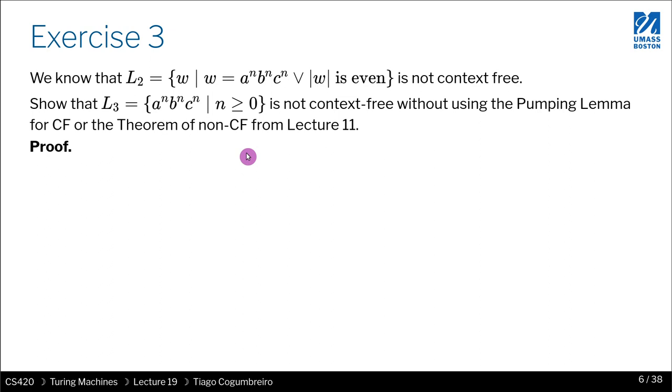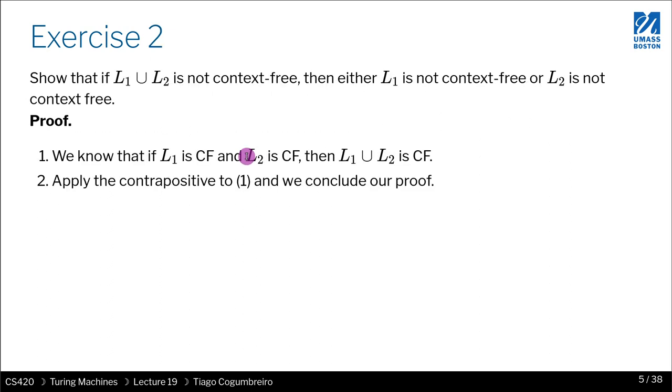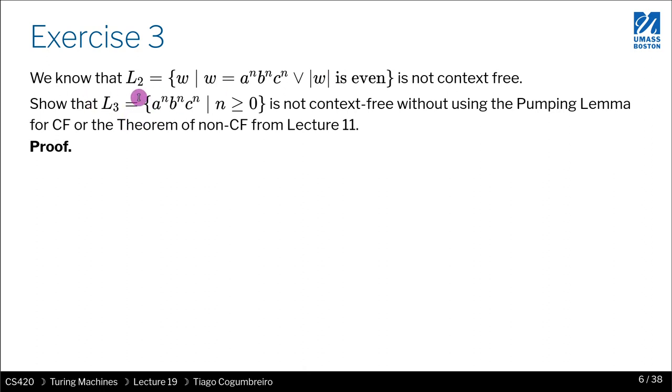But, what we've learned before is that, in the previous example, if L1 union with L2 is not context-free, then, either L1 is not context-free, or L2 is not context-free. So, if we use this result, we can actually conclude that L3 is not context-free. Why? Because, if this is not context-free, then either L2 can be separated into two languages. The first one is this one, the second one is this one.